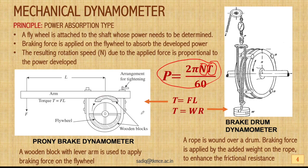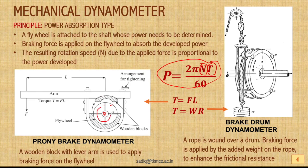There are two examples shown: a prony brake dynamometer, one of the simplest methods, and a brake drum dynamometer. In the prony brake, there is a flywheel mounted on a shaft coming from a prime mover such as a turbine or IC engine. There are two wooden blocks — one fixed to the frame and one attached with an arm that has a facility to provide force at a particular distance.